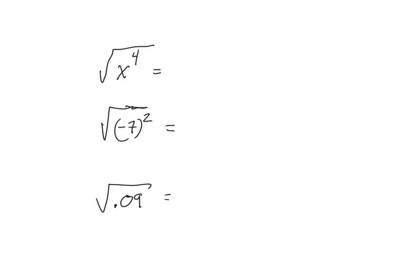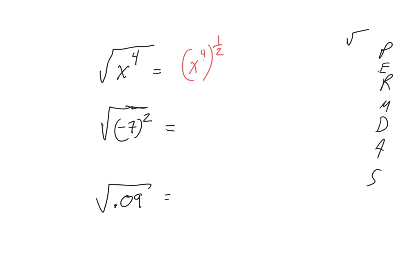The square root of x to the 4th — the square root symbol is taking us back a step. Exponents and roots are inverse operations. The square root is the opposite of the exponent squared. This can also be rewritten as x to the 4th to the 1 half, since the square root is the 1 half. When I have powers raised to powers, we multiply — so it's x to the 4th times a half, which is equal to x squared.